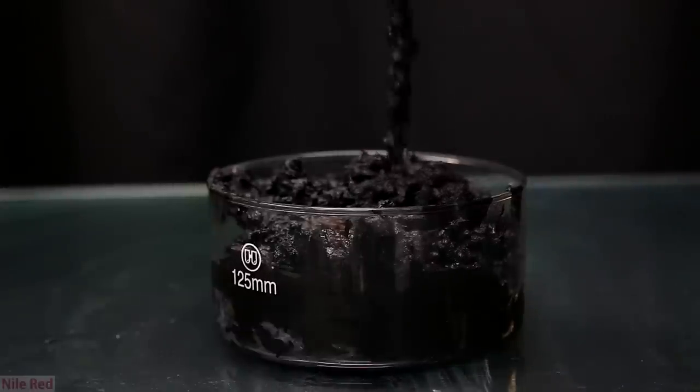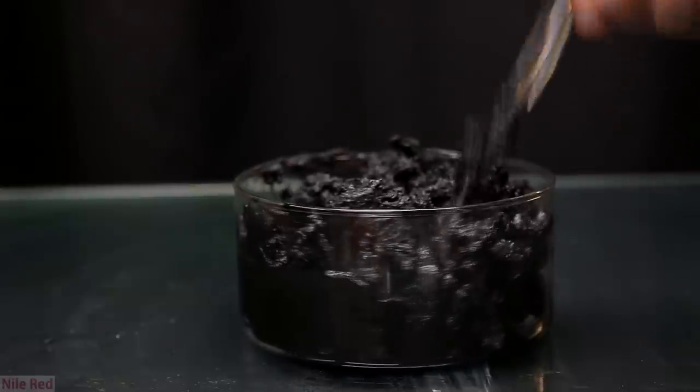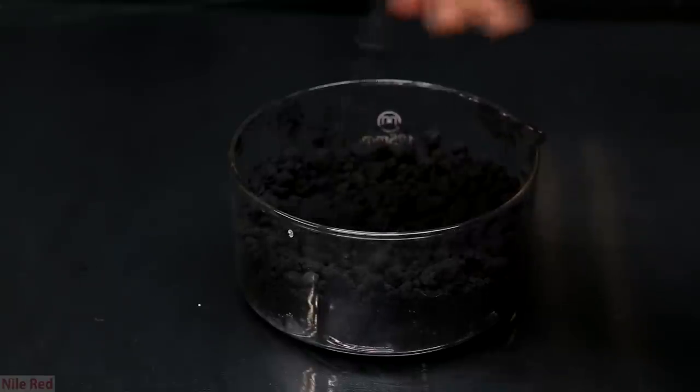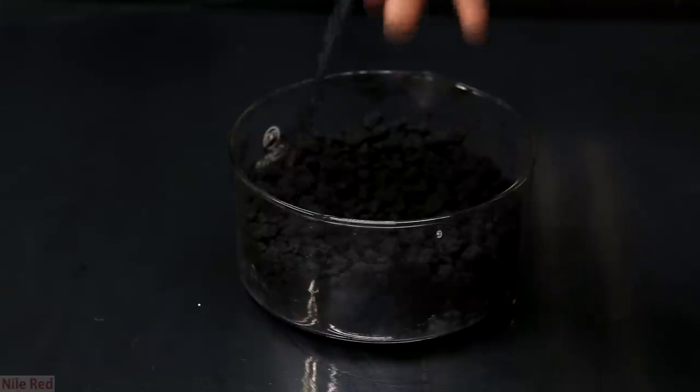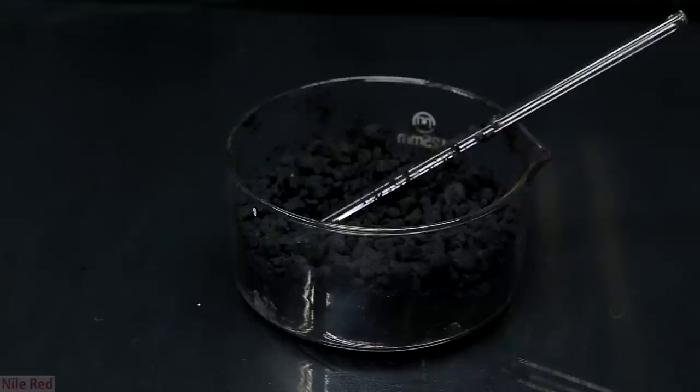Once it was all transferred I was left with a nice amount of black paste. So as I said the next step is to put it into an oven. Once it had dried in the oven for a little while you can see the big difference. We're left with a nice clumpy mixture of manganese dioxide. If you want you could break up these clumps and powderize them but I honestly didn't really care.